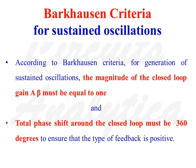Barkhausen Criteria for Sustained Oscillations: According to Barkhausen Criteria, for the generation of sustained oscillations, the magnitude of the closed loop gain A·beta must be equal to 1, and the total phase shift around the closed loop must be 360 degrees to ensure positive feedback.